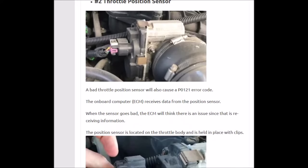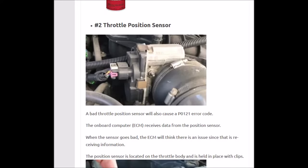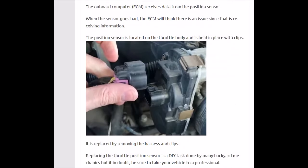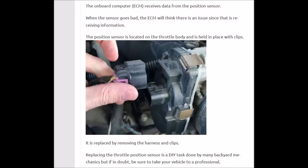Number two, it could be the throttle position sensor itself, which is another common cause after it being dirty. You can buy one and swap it out — they're pretty easy to do. They're located on the top, held on with some clips and a wiring harness, and really easy to swap out. You can buy them at a parts store or online on Amazon or eBay.